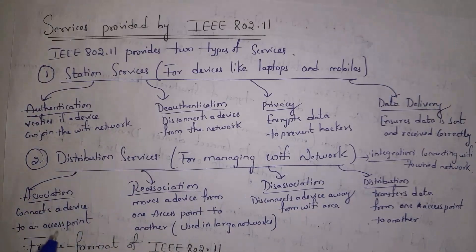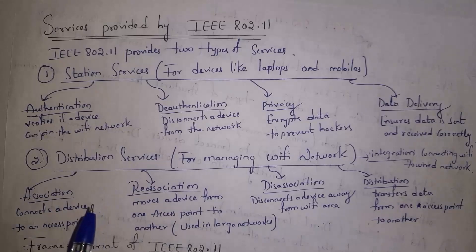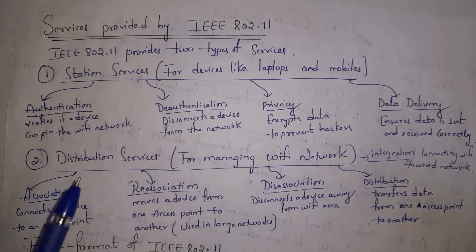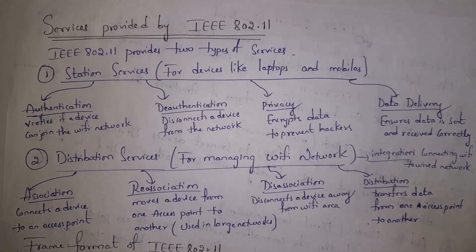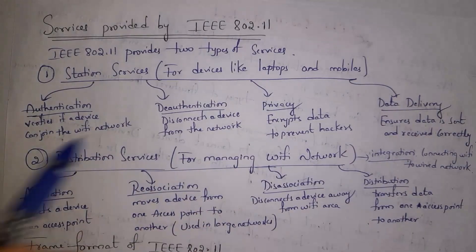Distribution services are used for managing a Wi-Fi network. Association means connecting a device to an access point. Moving from one access point to another is reassociation, and when a device moves out of range and disconnects, it is disassociation. Transferring data from one access point to another is distribution. Connecting Wi-Fi to a wider network is called integration.